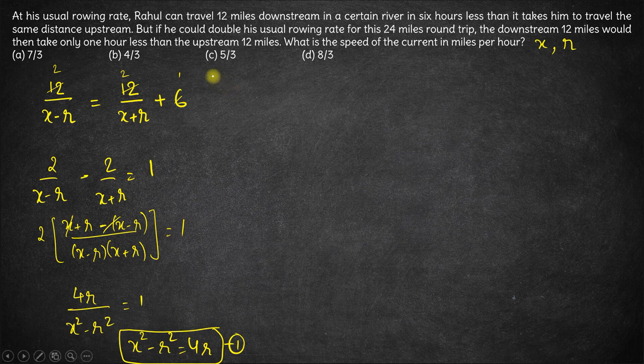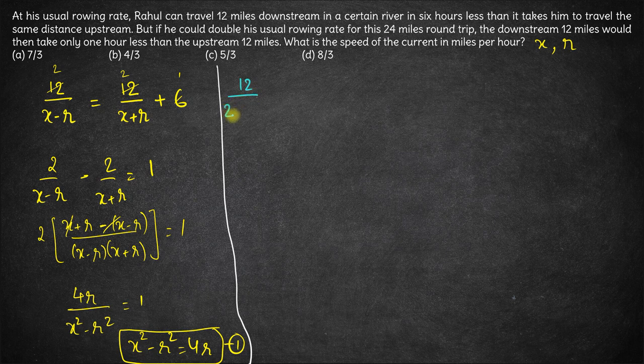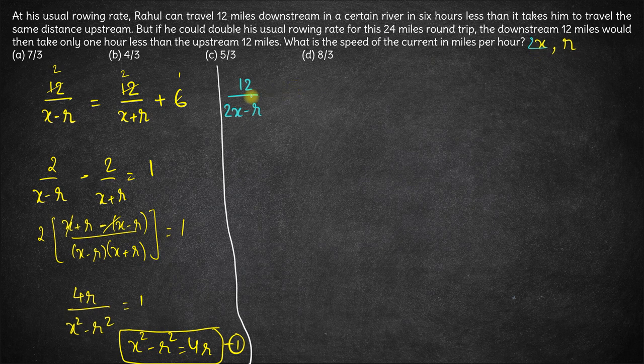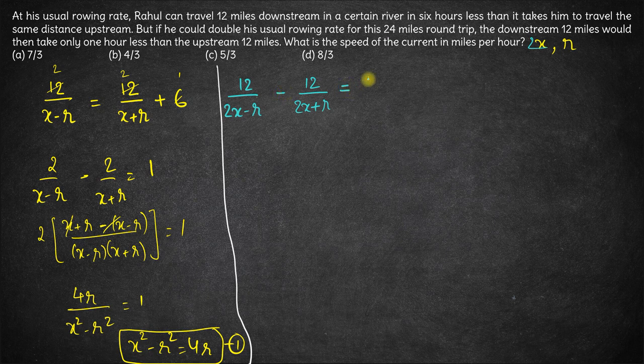Next, it's also given that if Rahul doubles his speed, now this difference in time taken is only 1 hour. So now time taken to go up will be 12 upon 2x minus r. Rahul's own speed becomes double, x becomes 2x now. Time taken to go down will be 12 upon 2x plus r. And this difference in time is equal to 1 hour now, so we can directly form this equation.